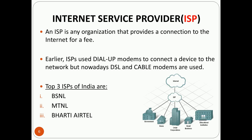The third requirement is ISP, that is internet service provider. An ISP is an organization that provides a connection to the internet for a fee — any company or organization that charges some fee. Earlier, ISPs used dial-up modems to connect a device to the network, but nowadays DSL and cable modems are used. The top three ISPs of India are BSNL, MTNL, and Bharti Airtel.